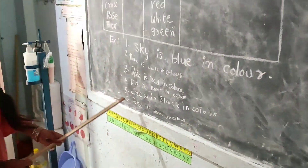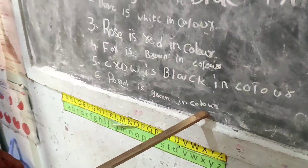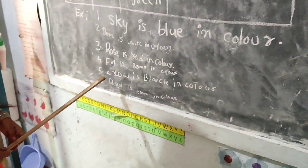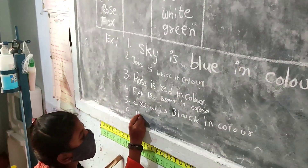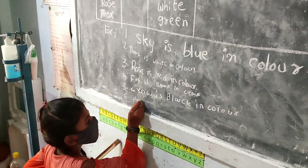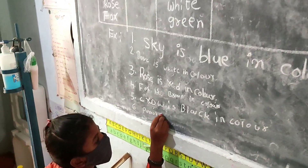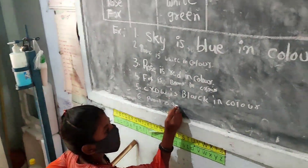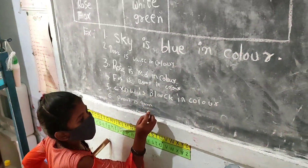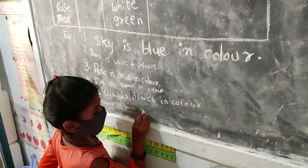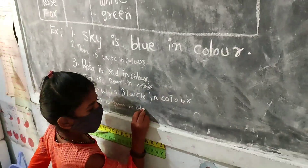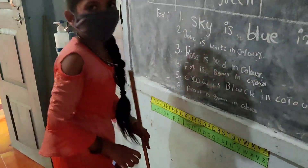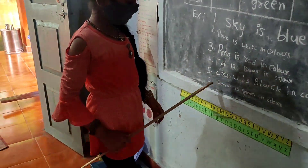Asya. Parrot is green in color. Green in color. Write properly. Again. Okay, last one: Parrot is green in color. Okay, very good. Standard. Go to your place.